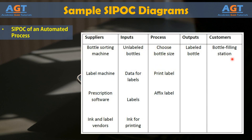Here we are looking at a sample SIPOC diagram of an automated process. This diagram represents an automated process in a mail-order pharmacy. The bottle sorting machine, the label machine, the prescription software, and ink and label vendors are all suppliers for the inputs needed in the process. They provide unlabeled bottles, data for labels, labels, and ink for printing. The process starts with choosing the bottle size, then printing the label and affixing the label. The final output is a labeled bottle, which goes to the customer — a bottle filling station.